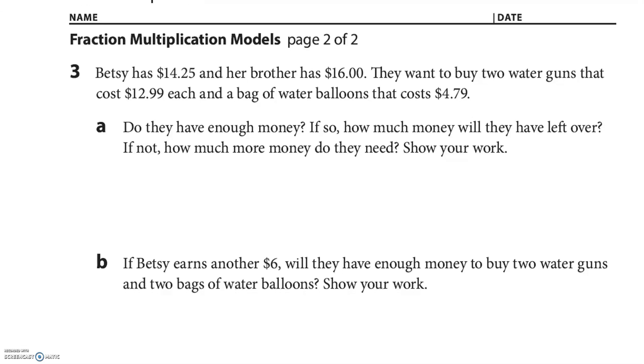Betsy has $14.25 and her brother has $16. They want to buy two water guns that cost $12.99 each and a bag of water balloons that costs $4.79. Do they have enough money? If so, how much money will they have left over? If not, how much more money do they need? So let's just add it all up, right?